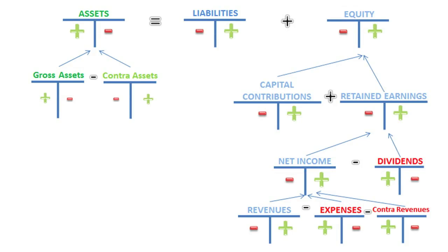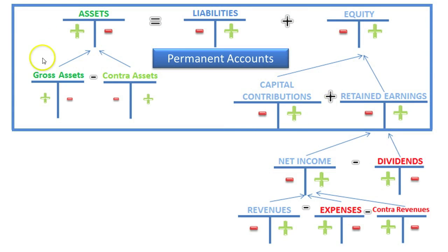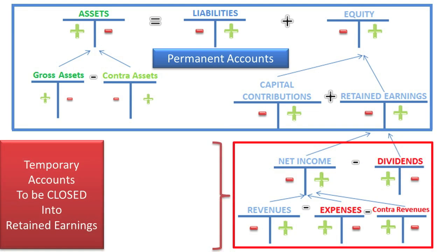Here is another way of looking at which accounts are permanent and which are temporary. All the accounts above the line in the expanded accounting equation will appear on the balance sheet — those are all permanent accounts. By default, if an account is not a permanent account, it must be a temporary account, also known as nominal accounts. Temporary accounts must be closed into Retained Earnings. We're going to close revenues, expenses, and contra revenues into an account called Income Summary, and then that account will be closed into Retained Earnings. The Dividends account will also be closed directly into Retained Earnings.